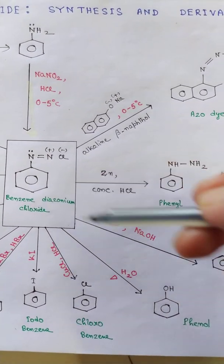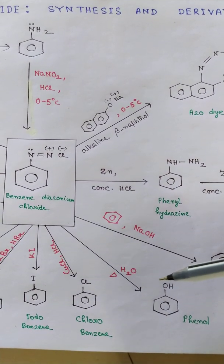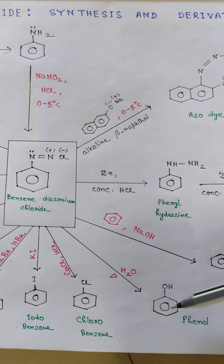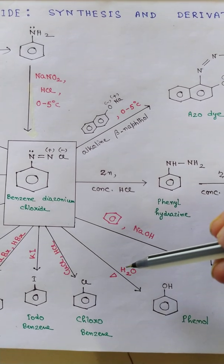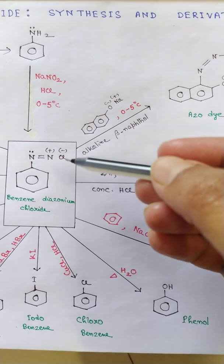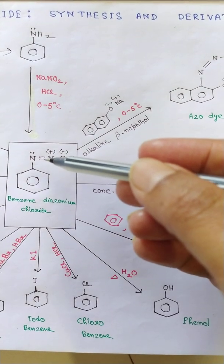Now when this benzene diazonium chloride is boiled with water or heated with water, it gives phenol. Here also we have H from water, Cl gives HCl, and dinitrogen comes out.